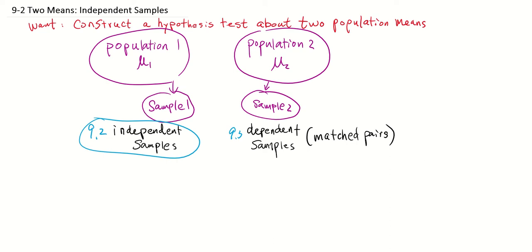The statistics you need from sample 1 are N1, which is the sample size for sample 1, X1 bar, which is the sample mean, and S1, which is the sample standard deviation. I'm talking about when the two samples are independent here. And the statistics you get from sample 2 are N2, X2 bar, and S2.